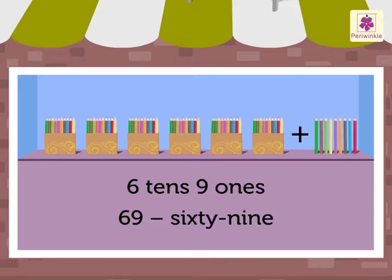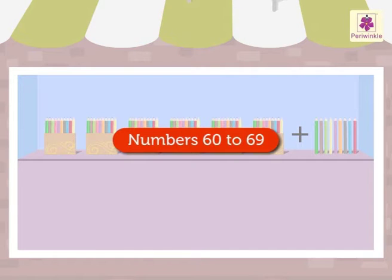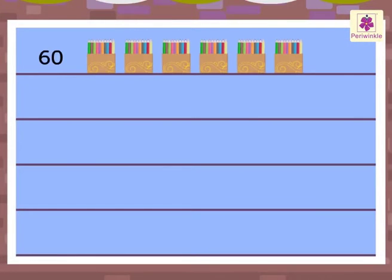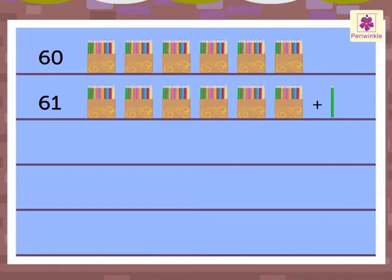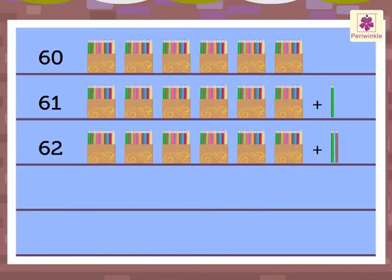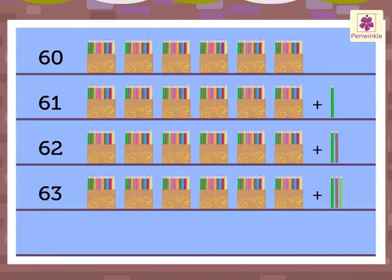Let's revise the numbers once again: 6-0 sixty, 6-1 sixty-one, 6-2 sixty-two, 6-3 sixty-three.